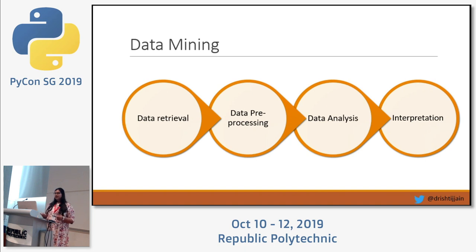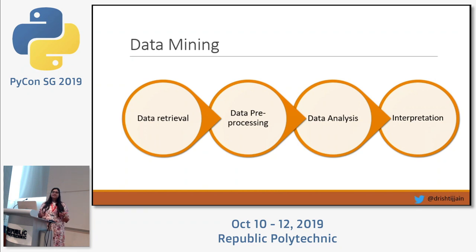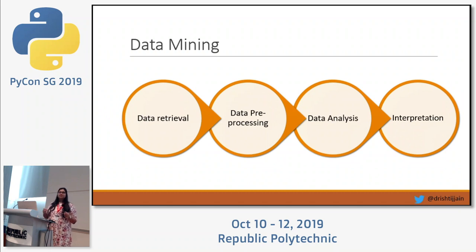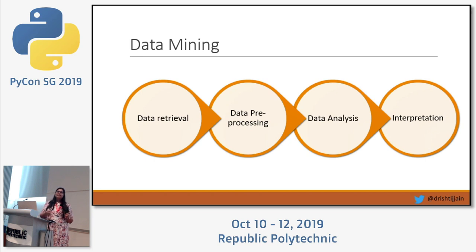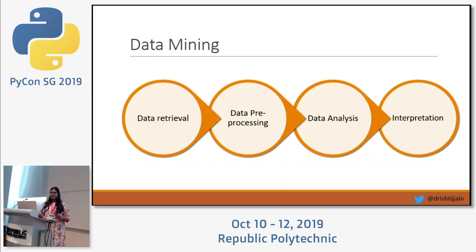The second step is data pre-processing, which involves activities like cleaning, integration of data from various sources, transformations, and reductions. When working with large data sets, we realize that most features might have missing values. We need a strong logic to either omit entries with maximum missing values or use mathematical techniques like mean, median, or mode to replace missing values for a particular column.